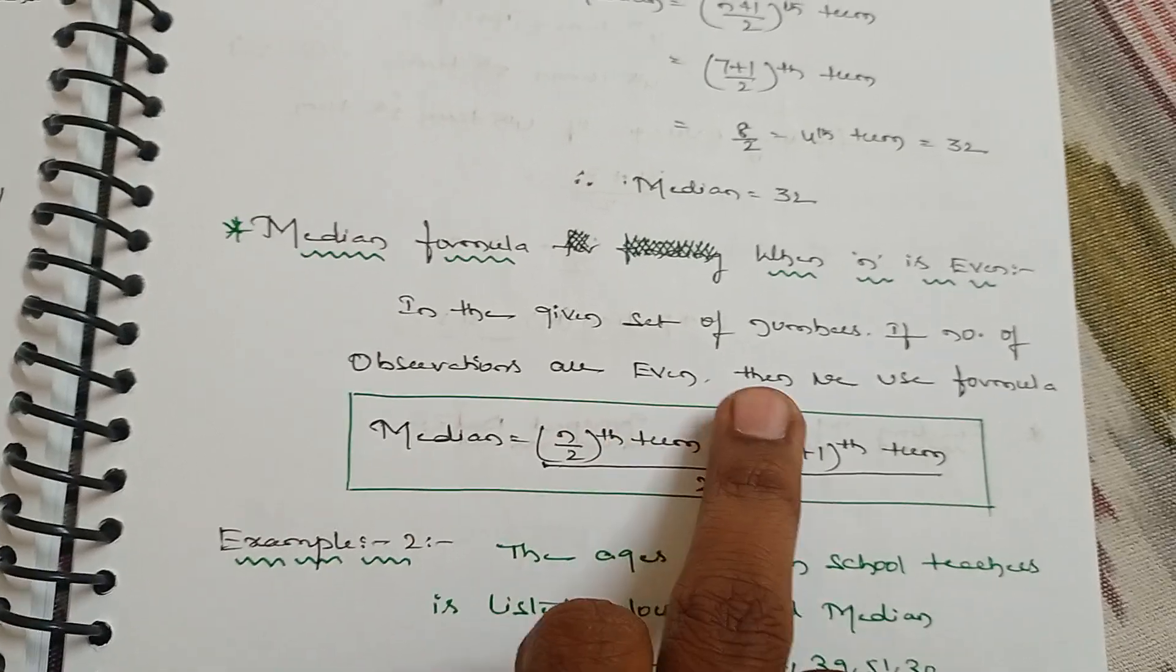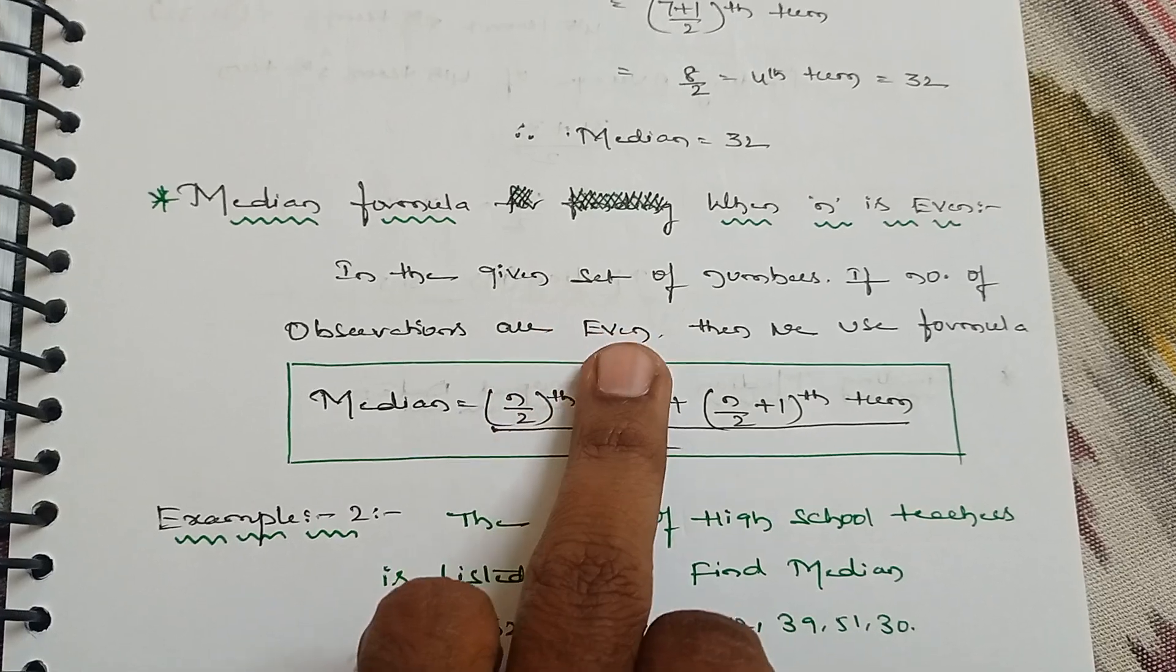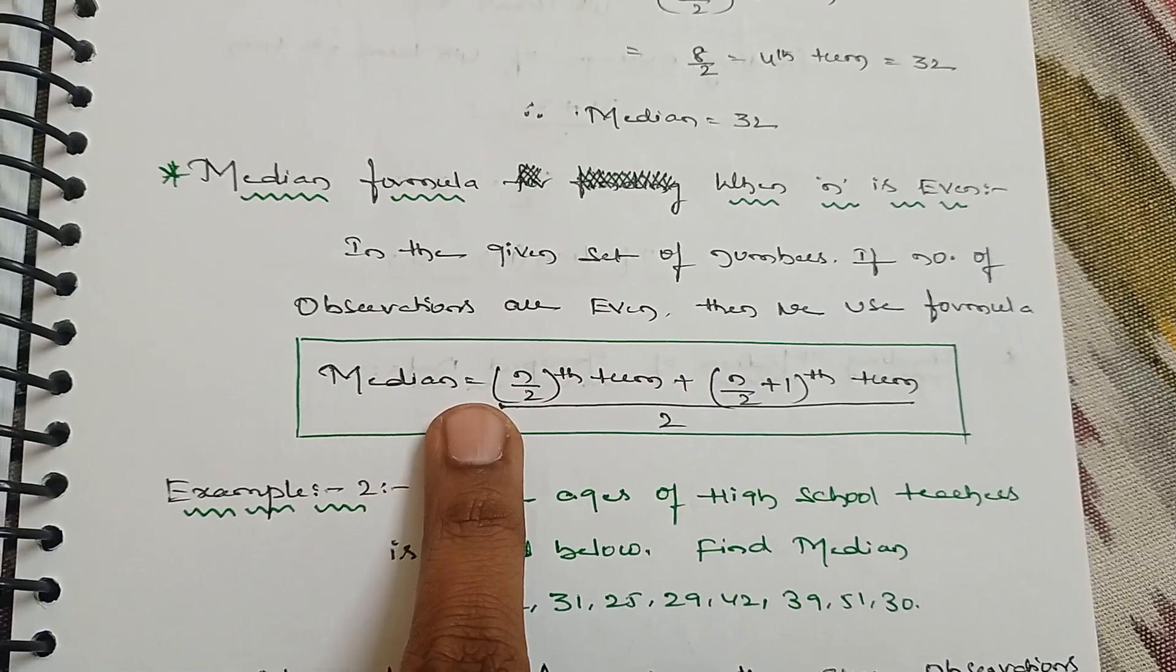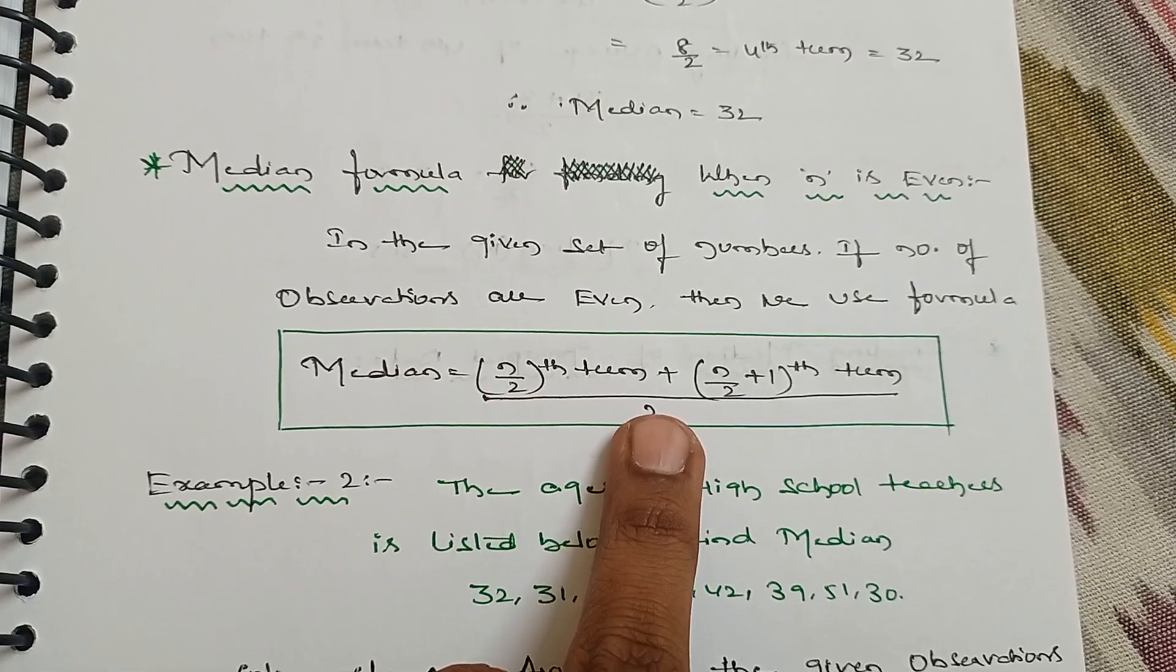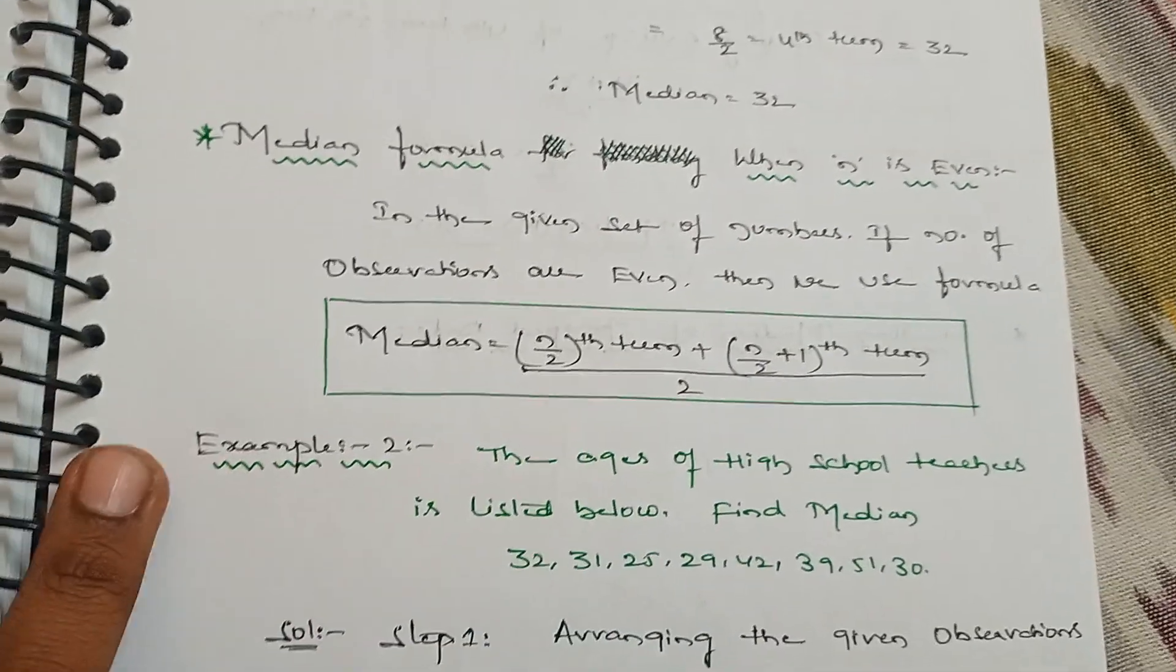when n is odd, but in this video we are going to discuss when n is even. In the given set of numbers, when the number of observations are even, we use the formula: Median equals (n/2)th term plus (n/2+1)th term divided by 2. This is the formula when the number of observations are even.